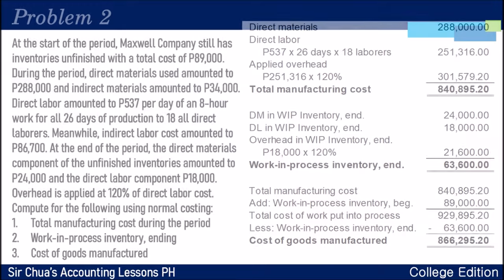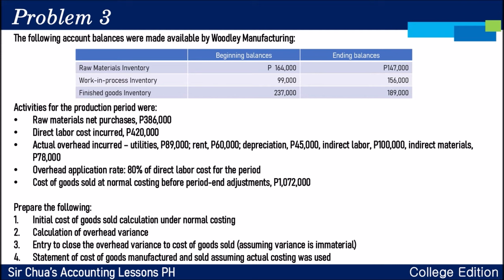Let's proceed with problem number three. The following account balances were made available by Woodley Manufacturing: raw materials inventory, work in process inventory, and finished goods inventory with beginning and ending balances. During the production period, net purchases of raw materials is $386,000, direct labor cost incurred is $420,000, and there are actual overhead items listed. The overhead application rate is 80% of direct labor cost. Cost of goods sold at normal costing before period-end adjustments is $1,072,000. We have four questions to answer.